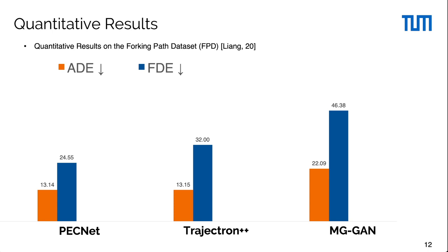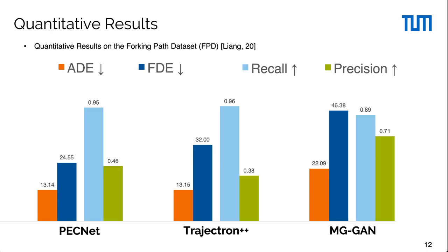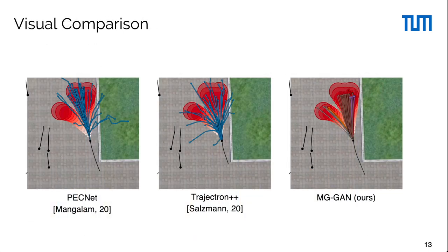While existing methods outperform MG-GAN on the traditional ADE and FDE metrics, they attain only very low precision with comparable recall. As a result, MG-GAN achieves state-of-the-art on the combined F1 measure. We find that these methods trade off precision for better ADE and FDE.